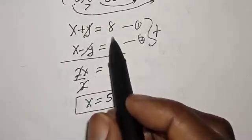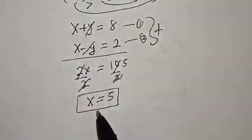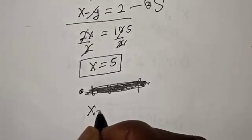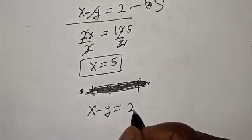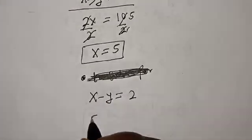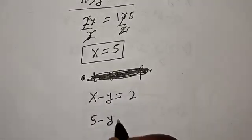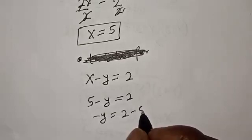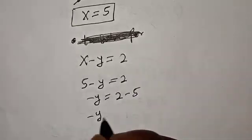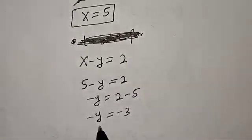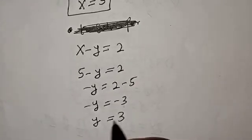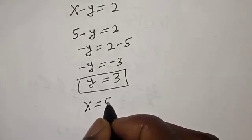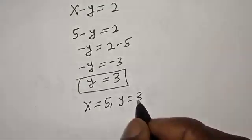Now we can substitute for x in either equation 1 or equation 2. Using equation 2: x minus y equals 2. When x is 5, we have 5 minus y equals 2, so minus y equals 2 minus 5, meaning minus y equals minus 3. Therefore y equals 3. Our final answers are x equals 5 and y equals 3.